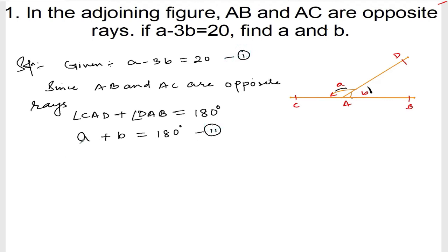So you can solve by any method. Let me just subtract equation number 2 from equation number 1. Subtracting equation number 2 from 1, we have equation number 1: A minus 3B, minus equation number 2: A plus B, is equal to 20 minus 180.